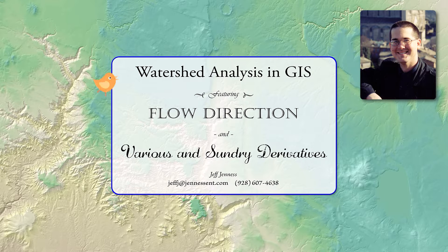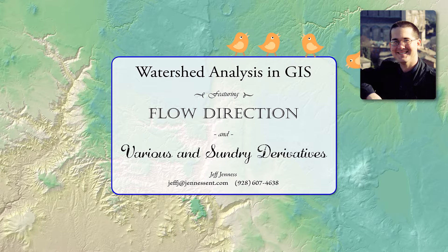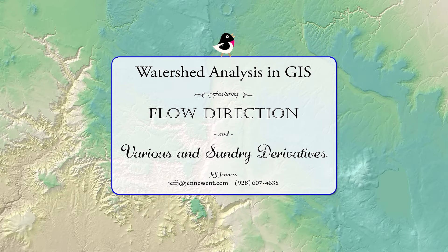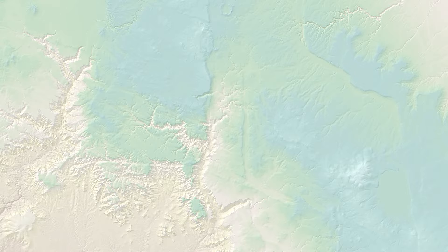The methods we'll discuss here only apply to surface hydrology, which is guided by the shape of the land. These methods are all based on the fact that water flows downhill, and this is a whole different animal than analyzing groundwater movements. That requires knowledge of the spatial distribution of aquifers, which we don't have, so we're going to stick to the surface stuff in this lab.